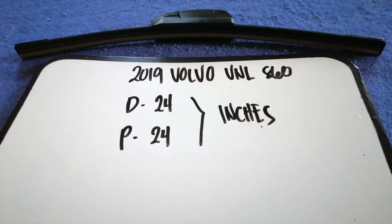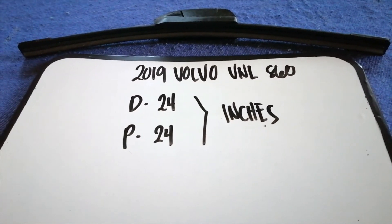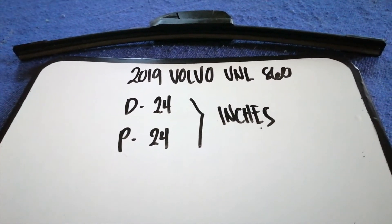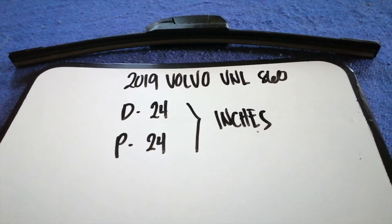So once again, the wiper blade replacement size for the 2019 Volvo VNL860 is 24 inches for the driver's side and 24 inches for the passenger side.